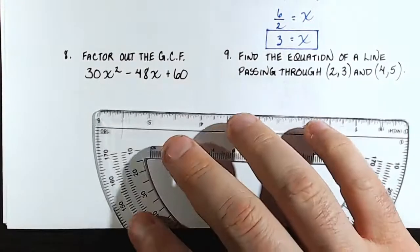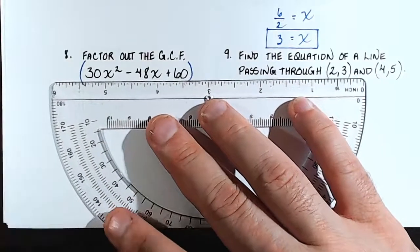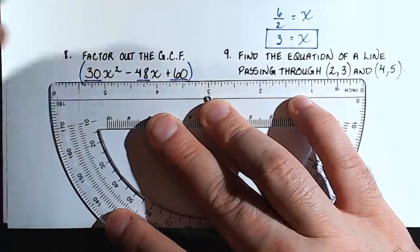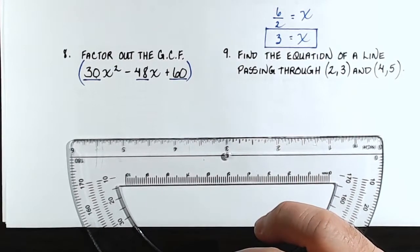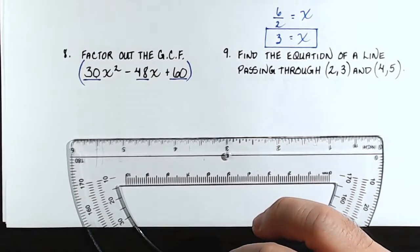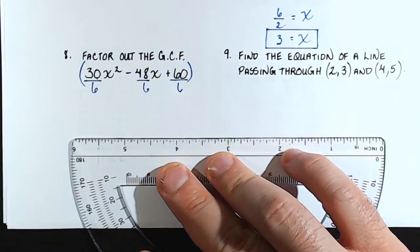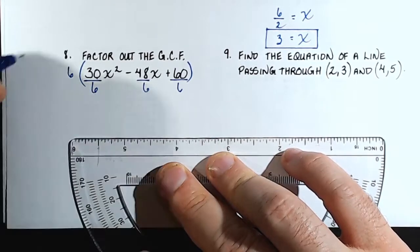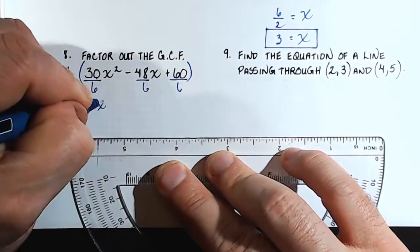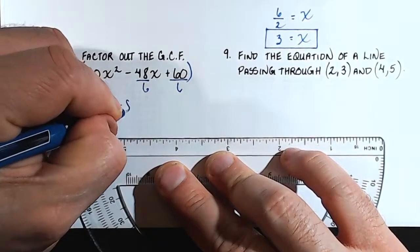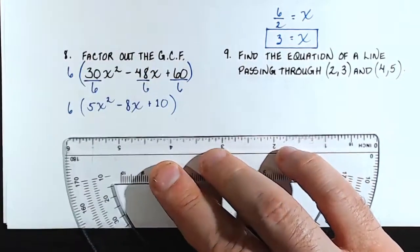Number 8: factor out the GCF — I sometimes call this reverse distribution. What's the biggest number you can divide out of each of the terms? The greatest common factor between 30, 48, and 60 — I can pull out a 6 because I can divide every term evenly by 6. So we get 6 on the outside: open parentheses, 30 divided by 6 is 5x squared, minus 48 divided by 6 is 8x, plus 60 divided by 6 is 10. No further reduction is possible, so that's it.